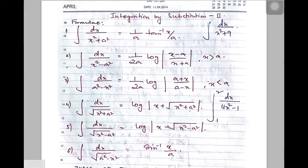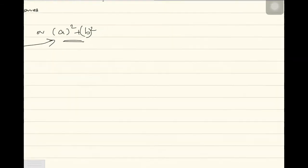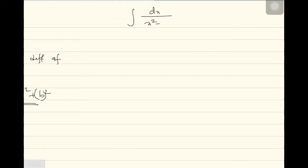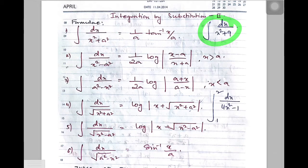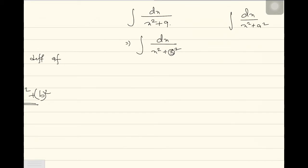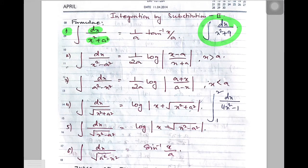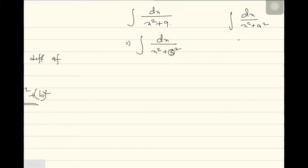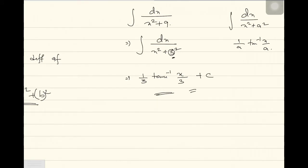Before we solve that sum, let's learn how to apply these six formulas with simple examples. The first example is integration dx divided by x squared plus 9. I can write this integral as integration dx divided by x squared plus 3 squared. Here 3 acts as a, so it looks like integration dx divided by x squared plus a squared. The formula is 1 by a tan inverse x by a. Since a is 3, the answer will be 1 by 3 tan inverse x by 3 plus c.